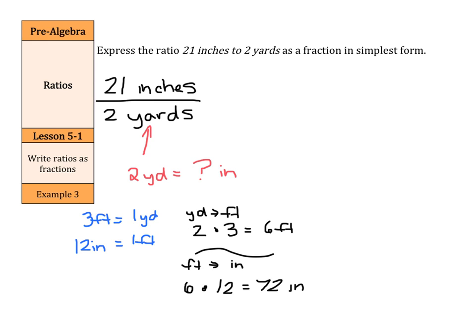So now as I rewrite this, twenty-one inches over two yards is the same thing as twenty-one inches over seventy-two inches. And now that I have inches and inches as my units, I can simplify this fraction. We're actually going to divide by three on top and bottom here. Twenty-one divided by three is seven inches. Seventy-two divided by three is twenty-four inches. And so my fraction in simplest form is simply seven over twenty-four.